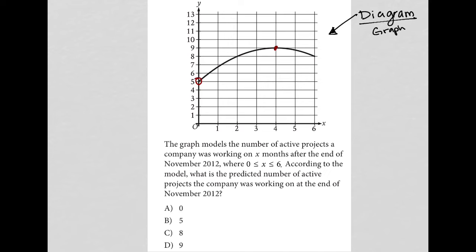Let's see what the question is actually asking before I continue on. The question says, the graph models the number of active projects a company was working on x months after the end of November 2012. So, each one of these is a month after the end of November 2012.